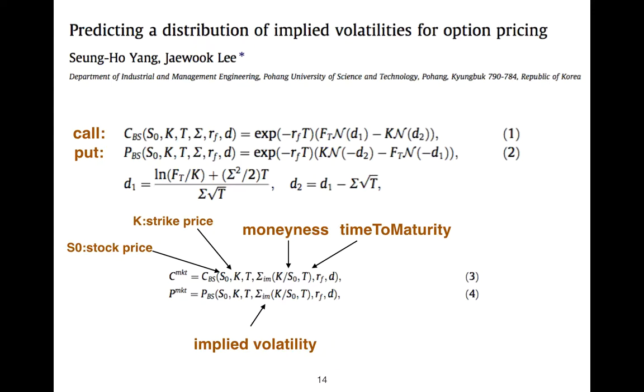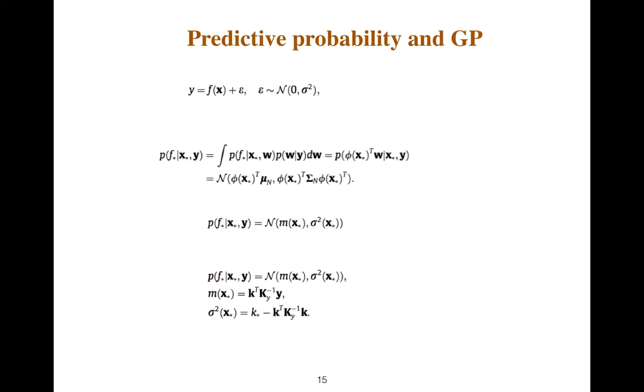We have moneyness, time to maturity, and implied volatility. If we solve this Black-Scholes equation, c is for call, p is for put. We can do for both of them.